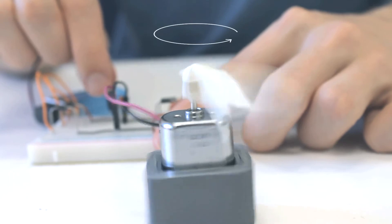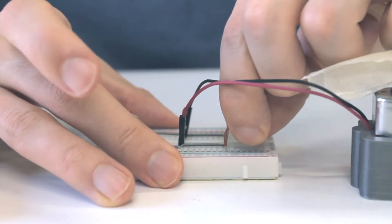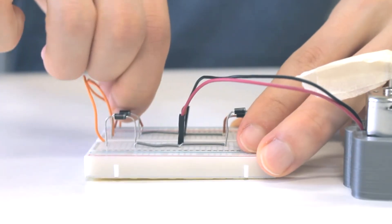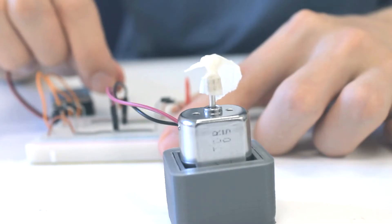An H-Bridge is a simple circuit that lets you change the direction of a current for a load. One of the most common use cases is changing the direction of rotation of a DC motor.